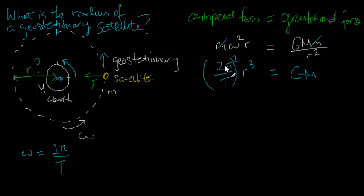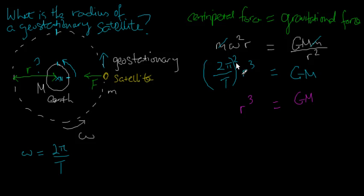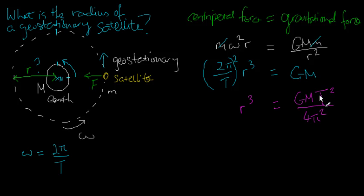Let me press on and make r cubed the subject. Moving everything else to the other side: on the right I have G·M·T² divided by 4π². So r cubed equals G·M·T² divided by 4π². I already know that T is 24 hours, big M is the mass of the earth, and big G is the gravitational constant.